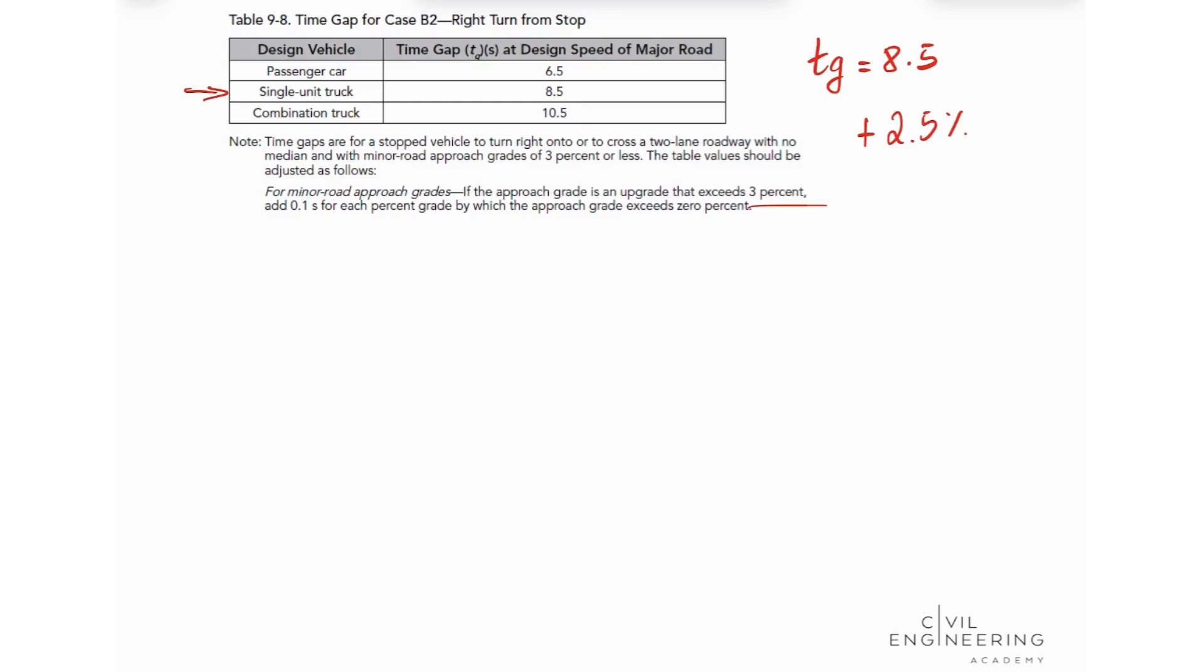So we can go ahead and plug the values into our equation. So we have that our intersection side distance is equal 1.47 times the speed of the vehicle in the major road times our T sub G. So let's input these values. We're going to have that 1.47 times our speed is 55 times our T sub G, which is 8.5. We're going to find that our intersection side distance is equal 687.22.